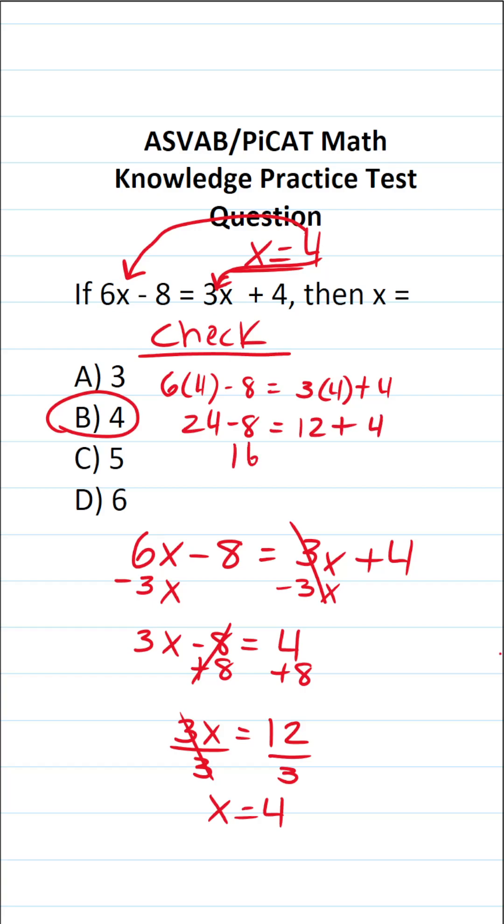24 minus 8 is 16. 12 plus 4 is 16. Since 16 equals 16 is a true mathematical statement, I'm fairly confident that x equals 4.